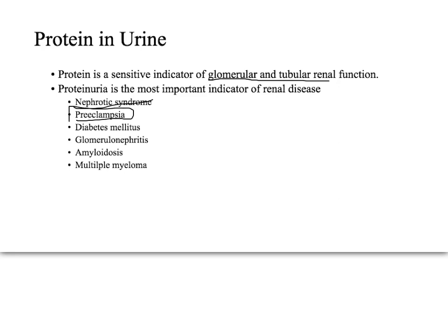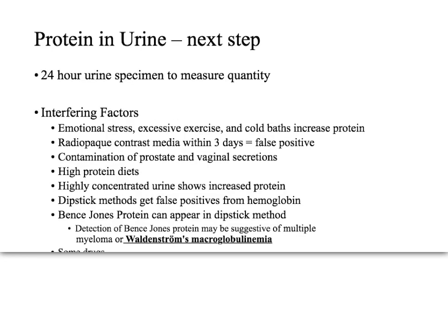Differential diagnoses for proteinuria include nephrotic syndrome, preeclampsia — a key indicator in pregnant women requiring blood pressure evaluation — diabetes mellitus causing glomerular damage from high blood sugar, glomerulonephritis, amyloidosis from deposition of amyloid plaques in various tissues, and multiple myeloma.